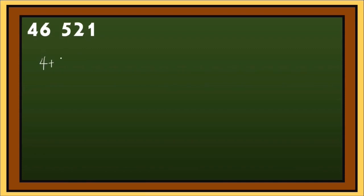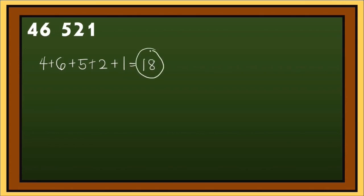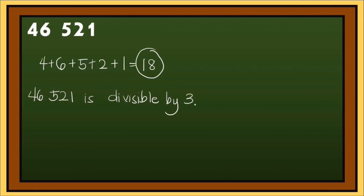To check if 46,521 is divisible by 3, let's add all the digits. We have 4 plus 6 plus 5 plus 2 plus 1. 4 plus 6 is 10, 10 plus 5 is 15, 15 plus 2 is 17, 17 plus 1 is equal to 18. 18 is a multiple of 3. So, 46,521 is divisible by 3.